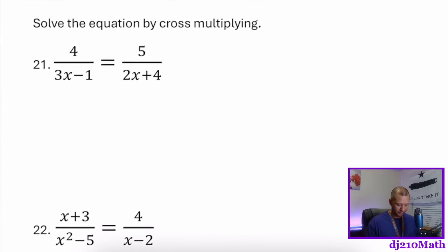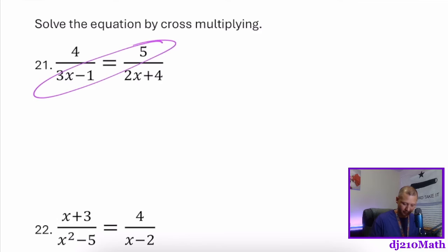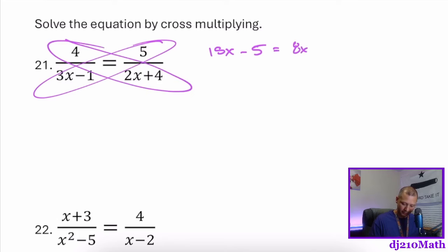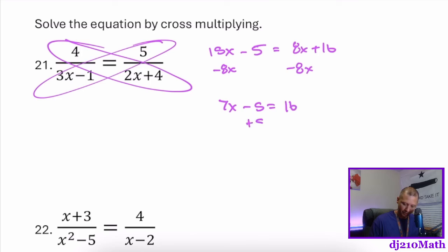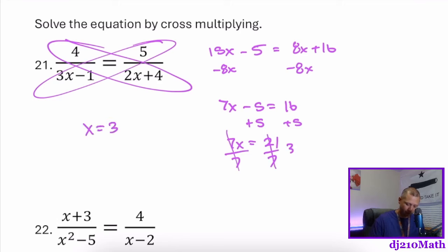Cross-multiply: 5(3x−1) = 15x − 5 on the left; right side gives 8x + 16. Solving: 15x − 8x = 7x, 16 + 5 = 21, so 7x = 21, x = 3. Checking: plugging 3 into the denominator gives 9 − 1 = 8 and 6 + 4 = 10, neither is zero, so x = 3 is good.